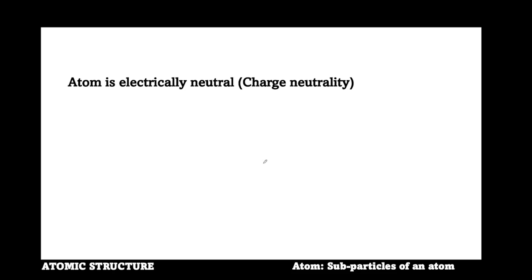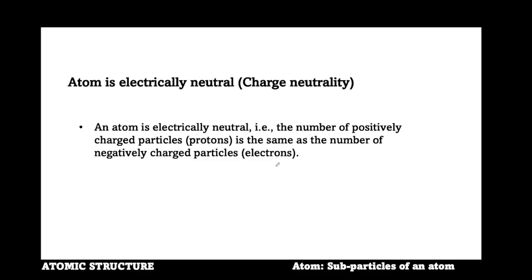Let us look at charge neutrality. Charge neutrality means no net difference between positive and negative charges when comparing the two charges. As earlier stated, protons are positive charges and electrons are negative charges. Hence, an atom is electrically neutral, that is, the number of proton charged particles is the same as the number of negatively charged particles, that is, electrons. Therefore, when the numbers are equal with no net difference, an atom can be regarded as electrically neutral.